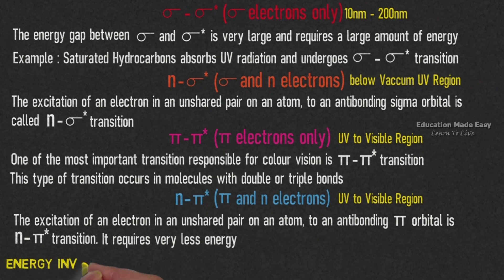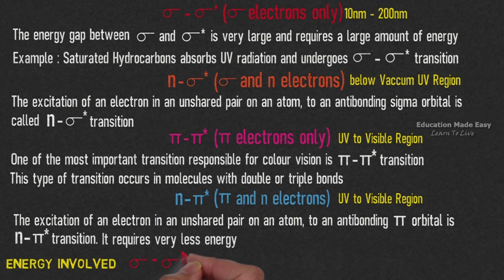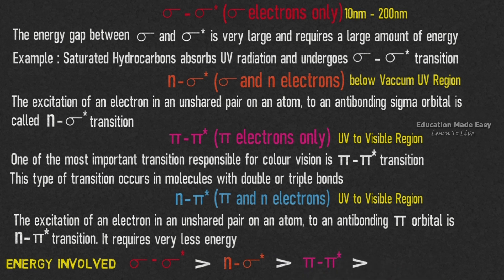The energy involved in electronic transitions will be in the order of sigma to sigma star, greater than n to sigma star, greater than pi to pi star, greater than n to pi star.